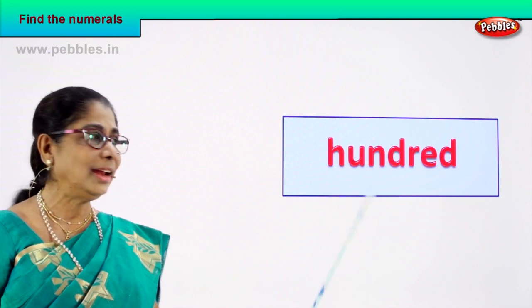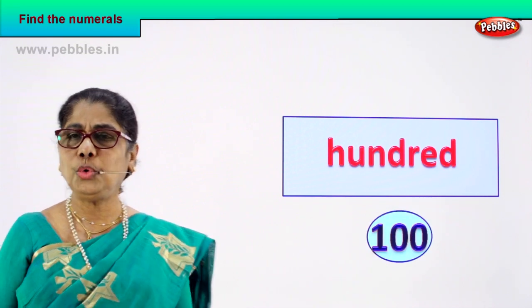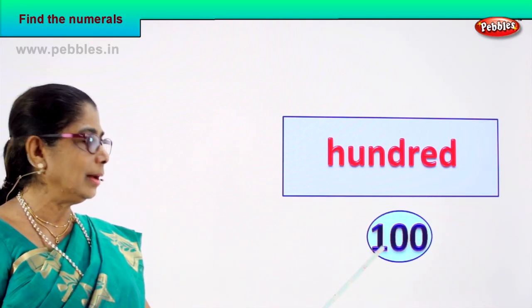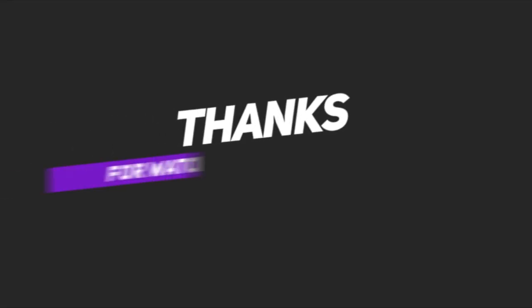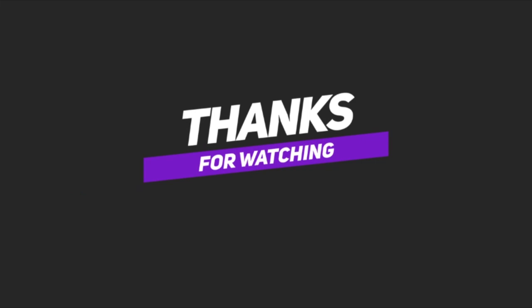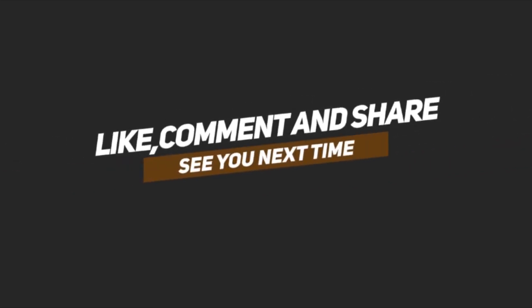How do you write one hundred? One, zero, zero — hundred. How do we write one hundred? One, zero, zero is hundred.